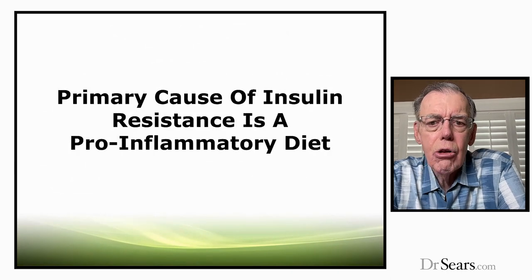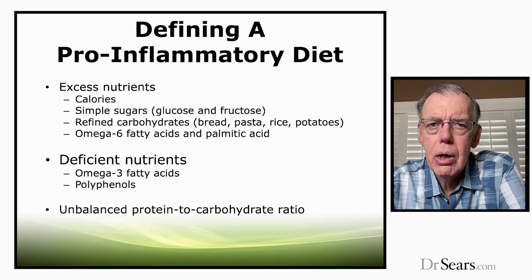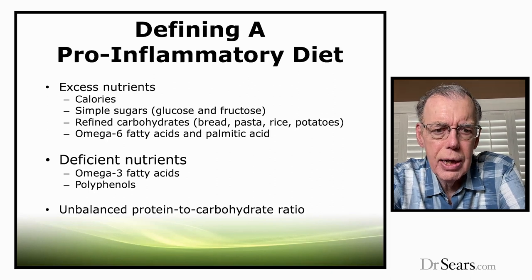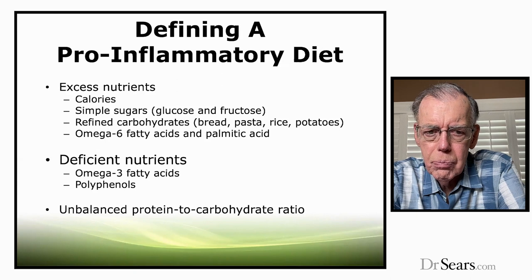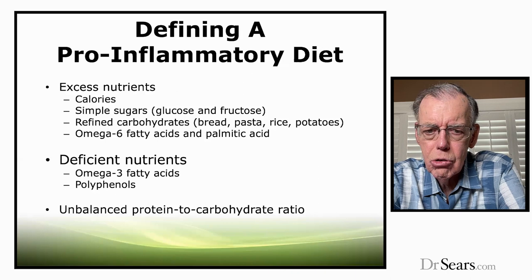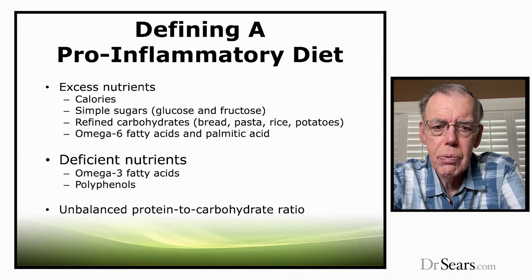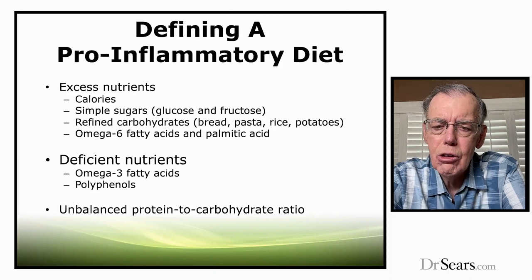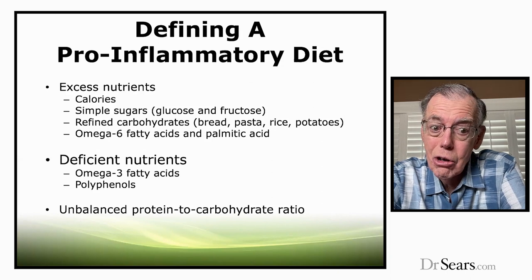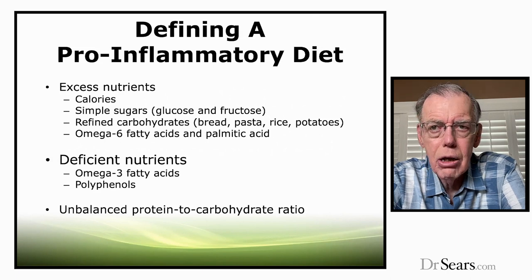The primary cause of insulin resistance is a pro-inflammatory diet. So again, it begs the question: how do you define a pro-inflammatory diet? There are three components. One could be excess nutrients — consuming too many calories, or consuming too many simple sugars like glucose or fructose, or consuming too many refined carbohydrates like bread, pasta, rice, and potatoes. Also consuming excess levels of omega-6 fatty acids and the saturated fat palmitic acid.